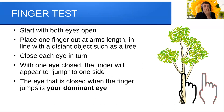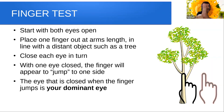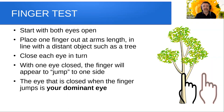You start with both eyes open, then place your finger out at arm's length in line with some distant object like a tree. You close each eye in turn — first the left, then the right. With one eye closed, the finger will appear to jump to one side. The eye that is closed when the finger jumps is your dominant eye. So if I close my right eye and see my finger appear to jump to the right, that means I am right-eye dominant.